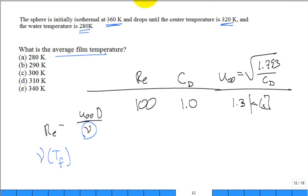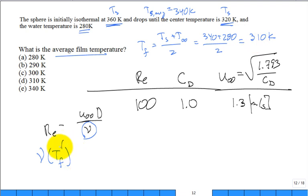So that Reynolds number is rho U infinity, let's put U infinity D over nu. This property right here is of what the fluid, the water. But it's temperature dependent and I really want to do a good job. So somebody says, here are the temperatures of interest. The sphere is initially 360 Kelvin. The center drops down to 320. That's the time period of interest of me falling through this fluid. And the water is always constant at 280. I want to evaluate that property, the viscosity, at the film temperature. What is the average film temperature? All right, let's go ahead and stop it.